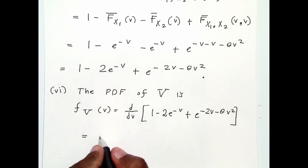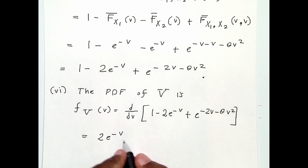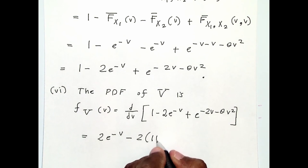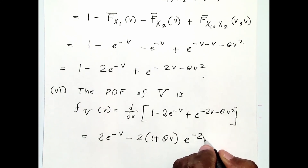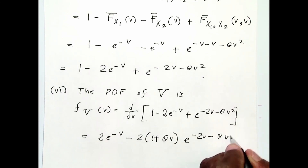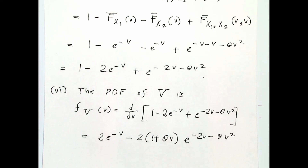For part 6, the PDF of V is the derivative of the CDF of V. Differentiating gives a result starting with minus 2 times related terms. This completes example 13, which also completes case 5 of portfolio theory. In the next video I will consider case 6 of portfolio theory, which will be the final of the six cases.